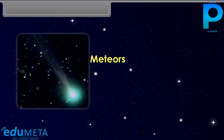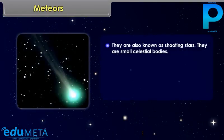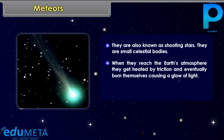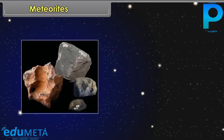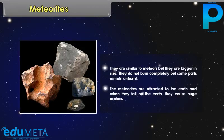Meteors are also known as shooting stars. They are small celestial bodies. When they reach the Earth's atmosphere, they get heated by friction and eventually burn themselves, causing a glow of light. They turn into fine dust before they fall onto the Earth. Meteorites are similar to meteors but bigger in size. They do not burn completely, and some parts remain unburnt. The meteorites are attracted to the Earth, and when they fall on the Earth, they cause huge craters.